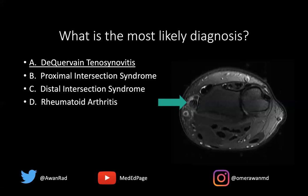That's in contrast to distal intersection syndrome, which happens at the level of the wrist, where the third compartment tendon — the extensor pollicis longus — crosses over the second to get to the thumb, because the EPL inserts onto the volar base of the first distal phalanx at the thumb. When it crosses over the second compartment, it results in a stenosing tenosynovitis. But we don't see that here because the third compartment looks pretty normal, and it's not crossing over at this site.